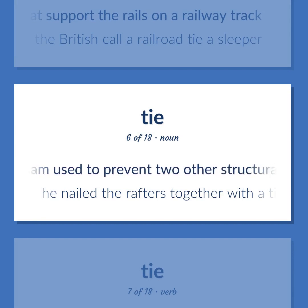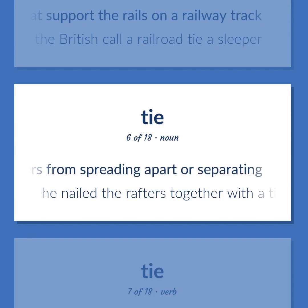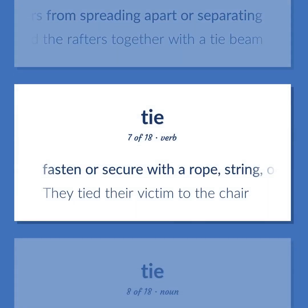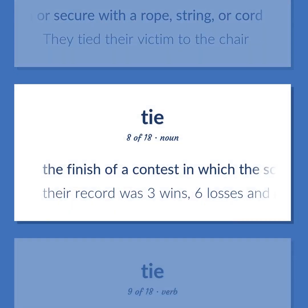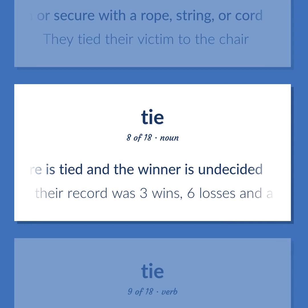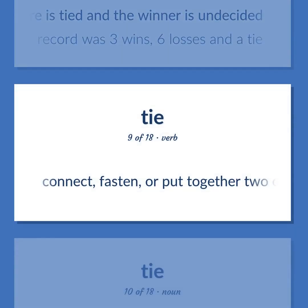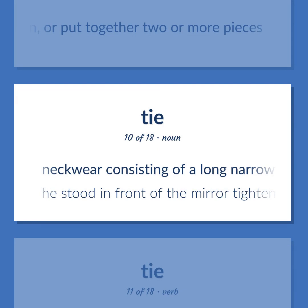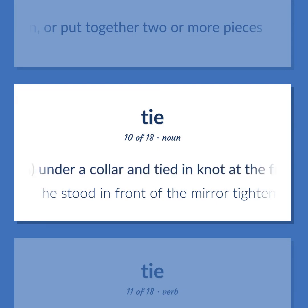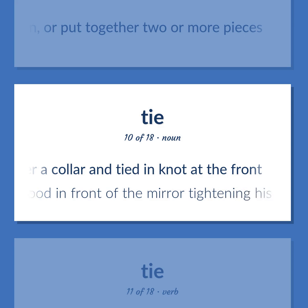A horizontal beam used to prevent two other structural members from spreading apart or separating. He nailed the rafters together with a tie beam. Fasten or secure with a rope, string, or cord. They tied their victim to the chair. The finish of a contest in which the score is tied and the winner is undecided. Their record was three wins, six losses and a tie. Connect, fasten, or put together two or more pieces. Neckwear consisting of a long narrow piece of material worn, mostly by men, under a collar and tied in knot at the front. He stood in front of the mirror tightening his necktie.